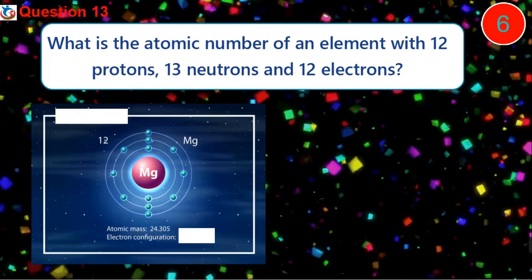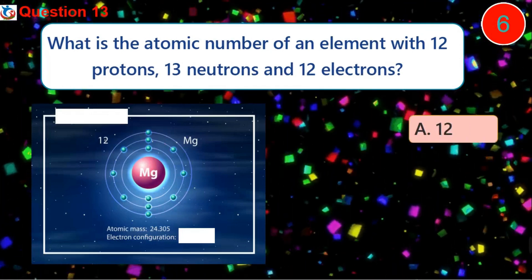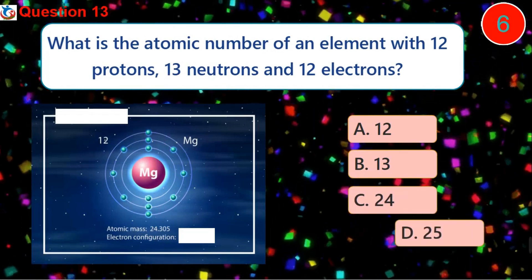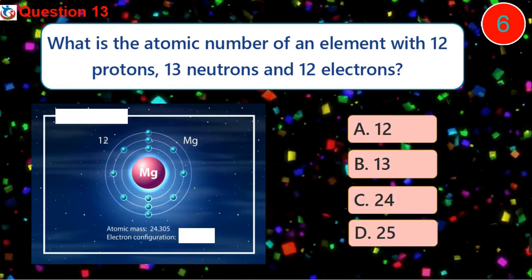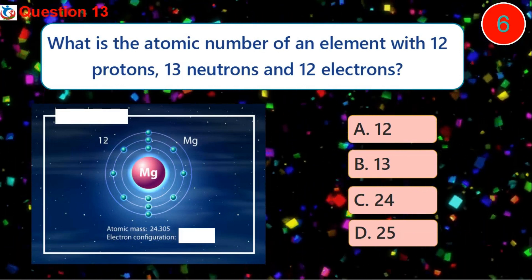Question 13. What is the atomic number of an element with 12 protons, 13 neutrons and 12 electrons? A. 12 B. 13 C. 24 D. 25.